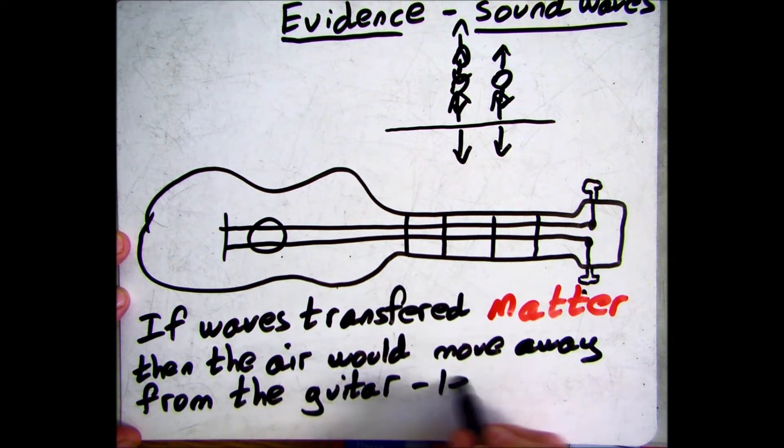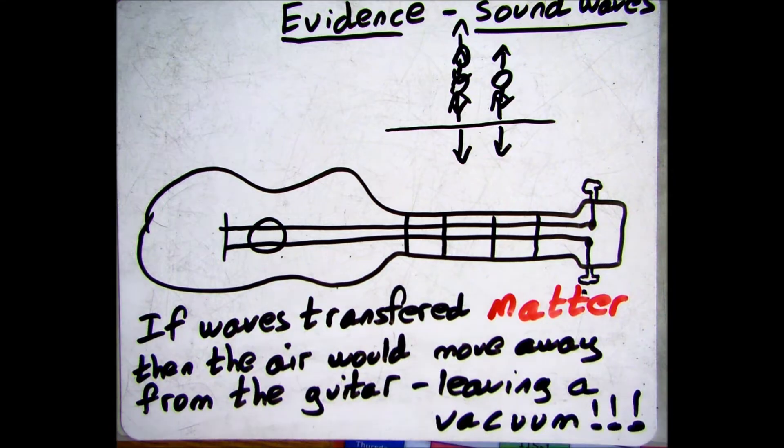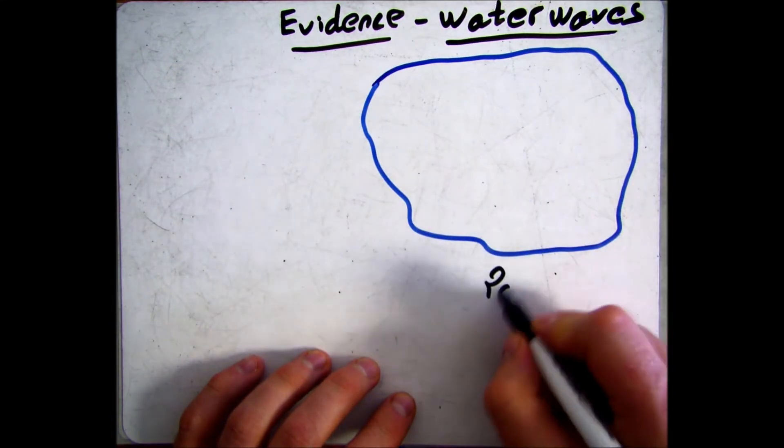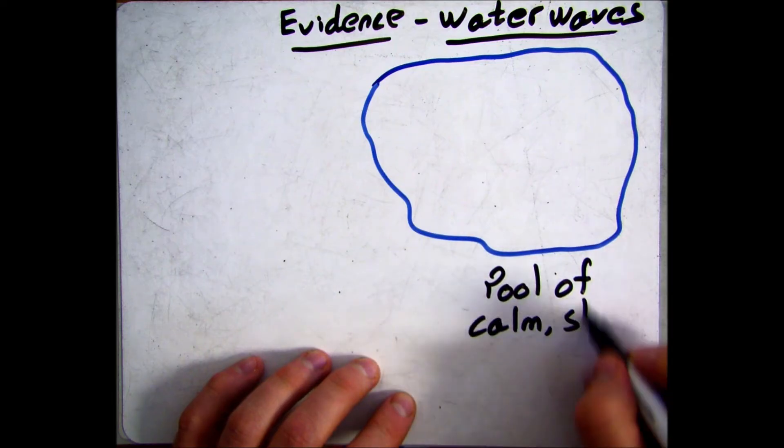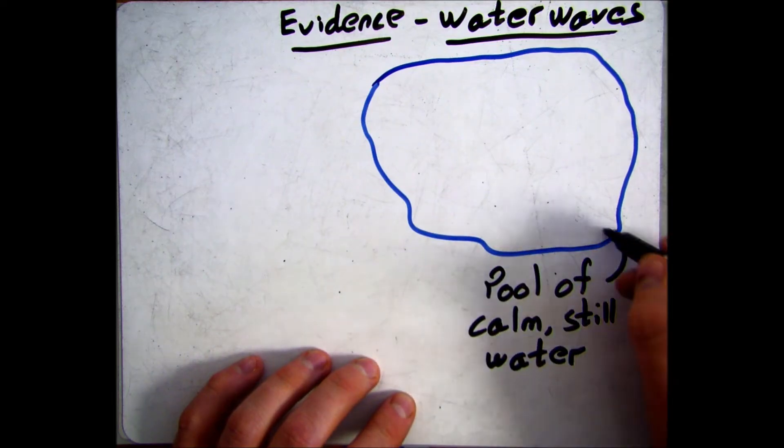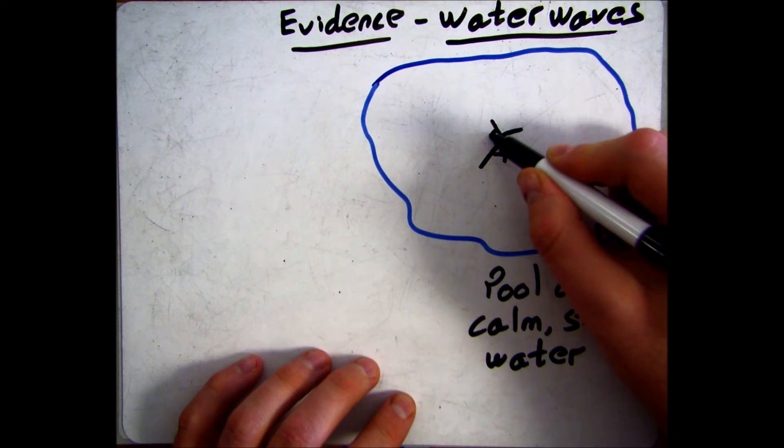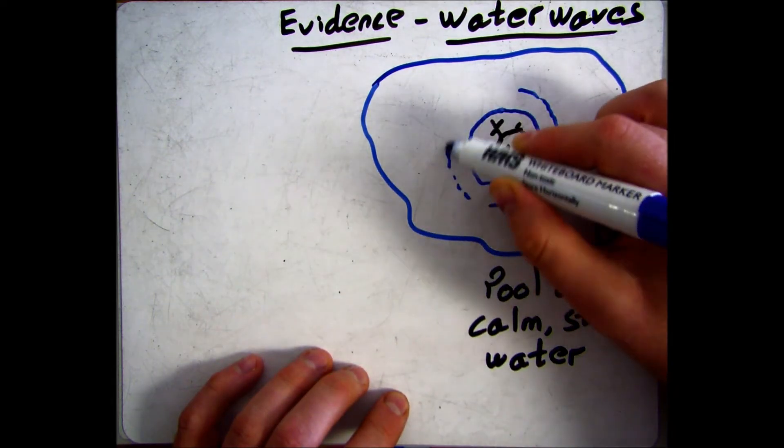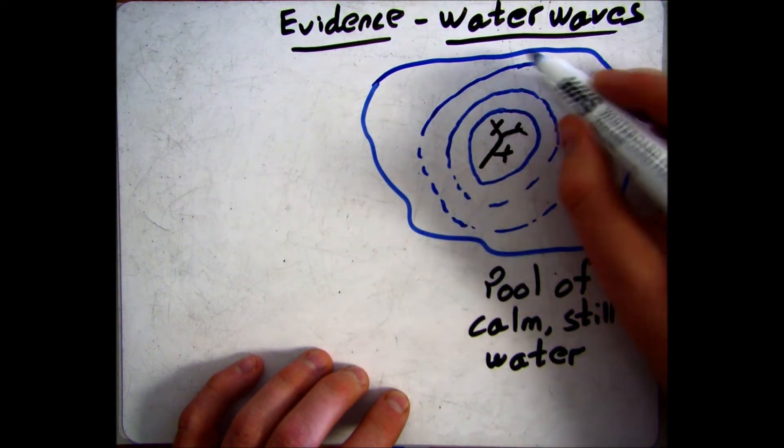We also need to look at water waves as examples of waves transferring energy and not matter. So here we have a pool of still calm water and we're going to drop a twig into the pool. We would see ripples - waves - move out from that source to the edges of the pool.